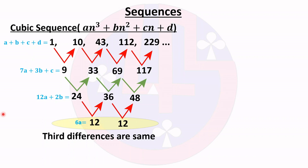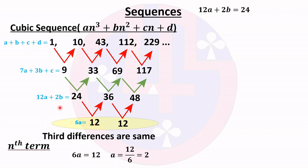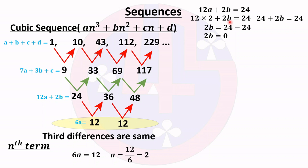Solving the first equation, 6a = 12 gives a = 2. Substituting into the second equation: 12(2) + 2b = 24, so 24 + 2b = 24, meaning 2b = 0, and therefore b = 0.